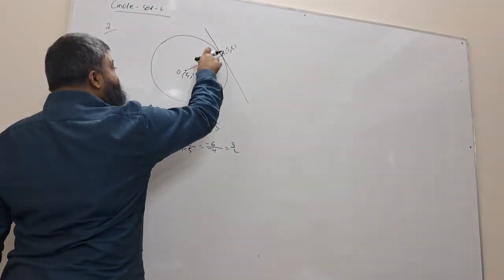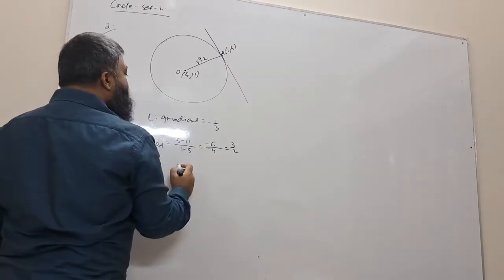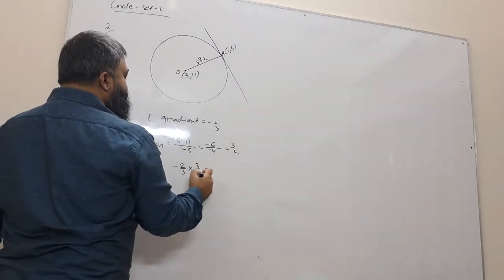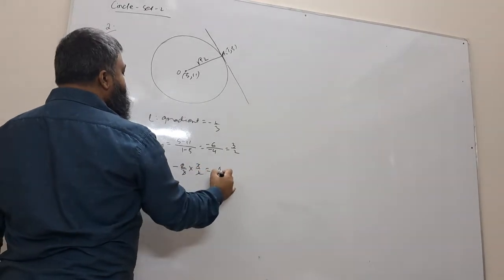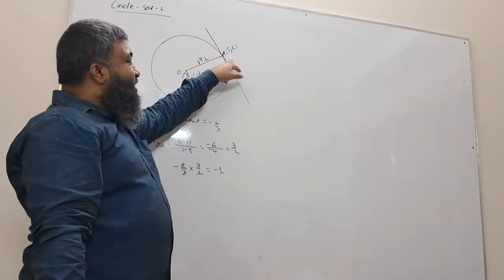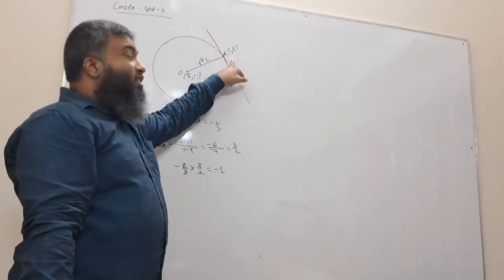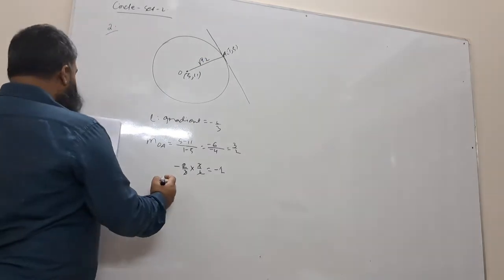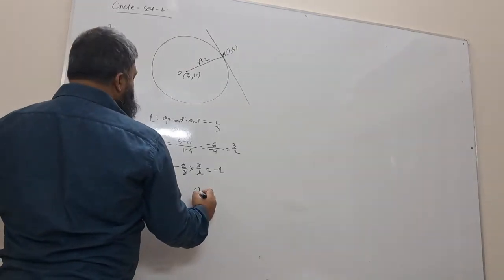Now, gradient is gradient multiplied by minus 2 by 3 into 3 by 2. That equals negative 1. That means it must be 90 degree proof.